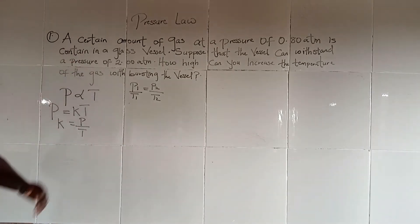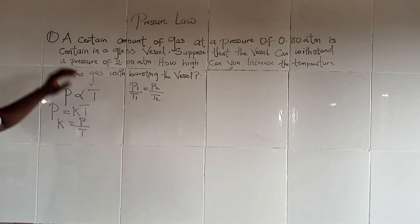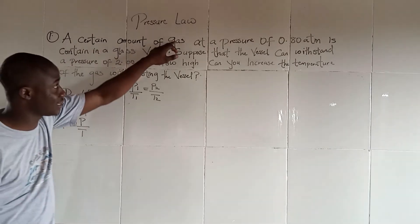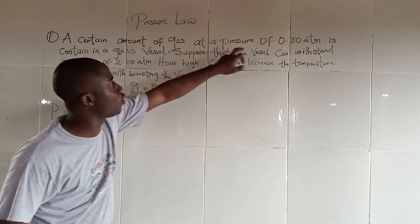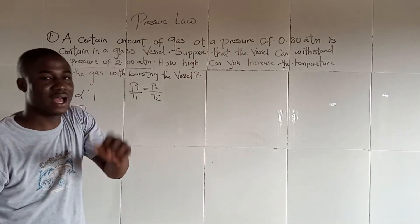Let's go ahead and solve this question written on the board. The question says a certain amount of gas at a pressure of 0.8 atmosphere.